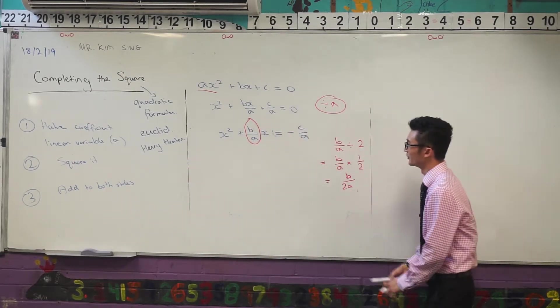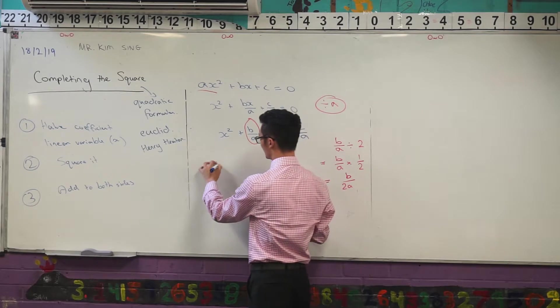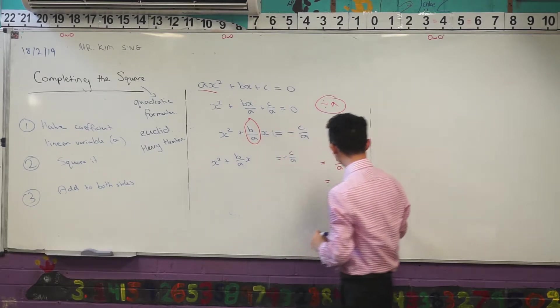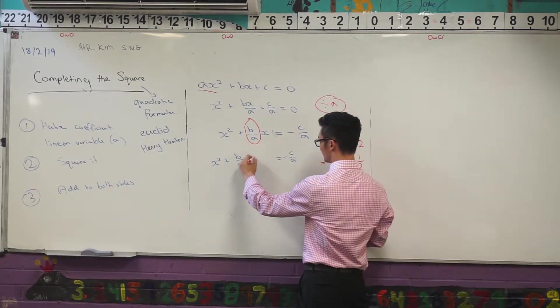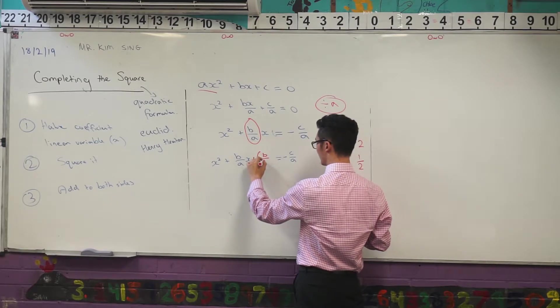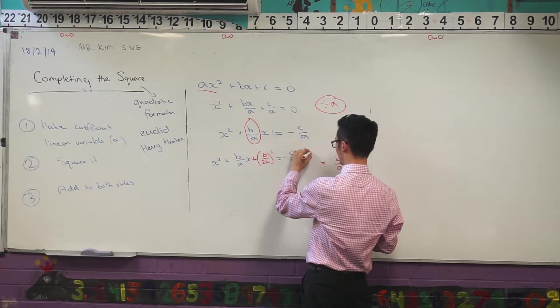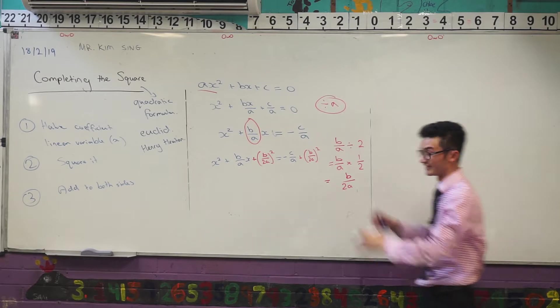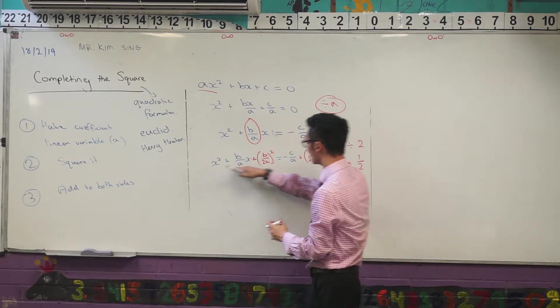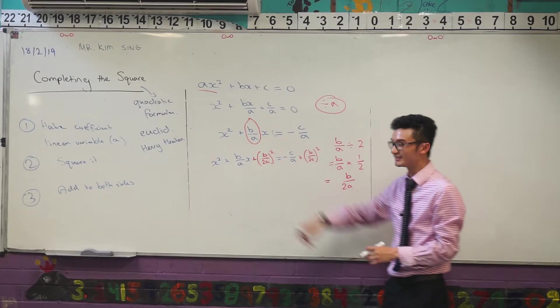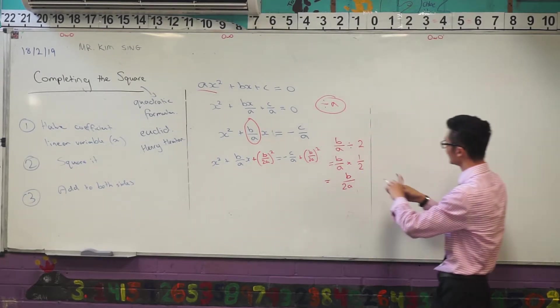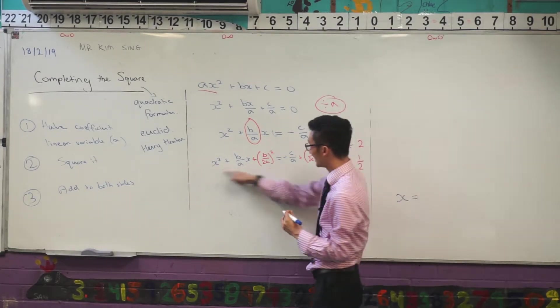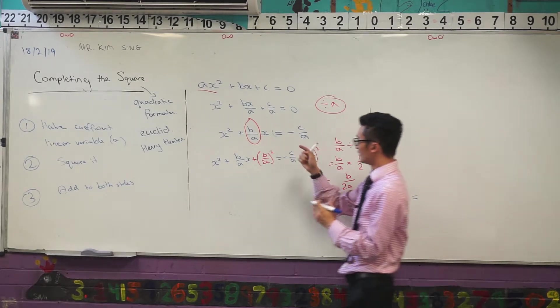Now I want to square it and add it to both sides. So that would be, in this case, if I'm squaring that and adding it to both sides, I would write it as b over 2a all squared and add that to both sides. Now it's time to come together. The reason why I've written it like this, rather than expanding this out just yet, is because, remember, what's the goal of this? The goal is that at the end of the day, I get x is equal to something. In order to do that, I have this trinomial and I want to factorize that.